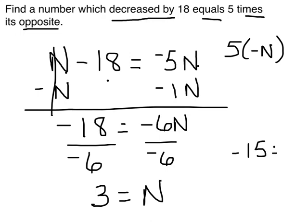So if N is 3 and I decrease that by 18, I'm going to have what? Negative 15. The opposite, if 3 is the number, the opposite of 3 is negative 3. And negative 3 times 5 is indeed negative 15. So my answer again does work.